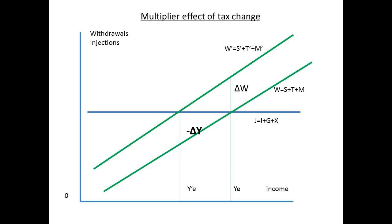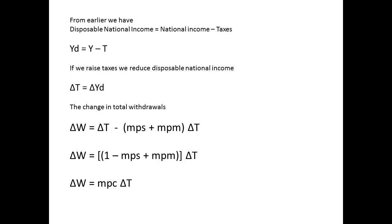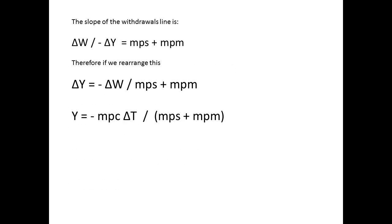What happens if taxes are raised? The withdrawal line now shifts from W to W-dashed. The value for YE moves to Y-dashed E — in other words, the equilibrium level of income is being reduced. Remember that disposable national income equals national income less tax taken. So raising taxes will reduce disposable national income. Delta T equals delta Y disposable. The change in withdrawals is given by delta W equals delta T minus the sum of MPS plus MPM divided by delta T. So delta W equals MPC times delta T. We can also calculate delta Y as negative delta W divided by MPS plus MPM, and Y as negative MPC times delta T divided by MPS plus MPM.